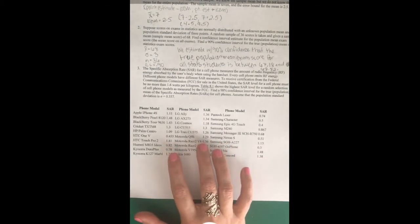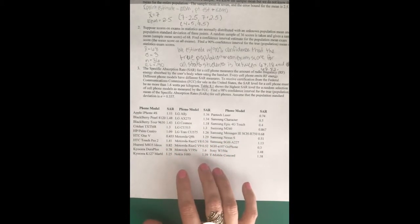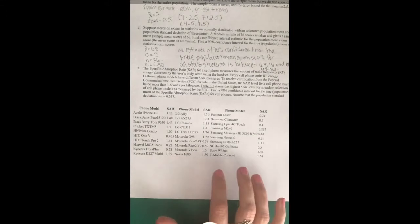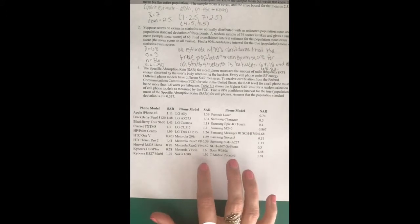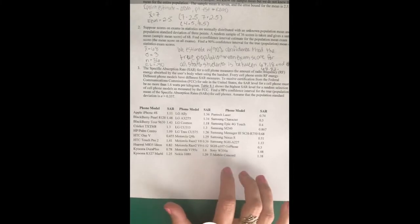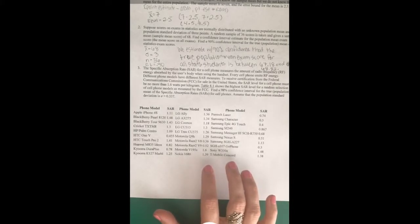Here's a table showing the highest SAR level for a random selection of cell phone models as measured by the FCC. We want to find the 98% confidence interval for the true population mean of the specific absorption rates for cell phones.